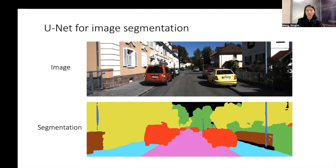So if we use UNet for this image segmentation task, the input of UNet will be the RGB image, and the output of UNet will be the semantic segmentation, or the pixel-level segmentation.